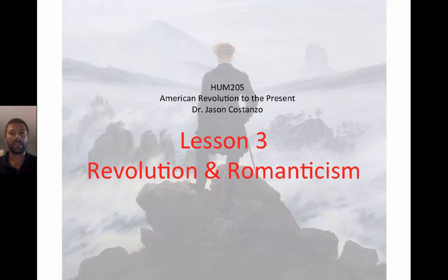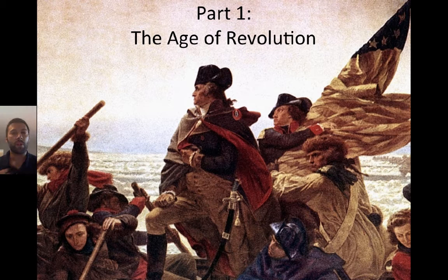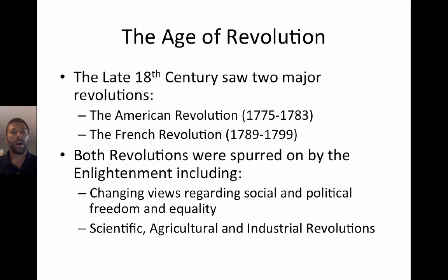We start with the first part: the Age of Revolution. Here you see a scene from the American Revolution — George Washington on the boat sailing. The Age of Revolution basically starts in the late 18th century, and we see two major revolutions at that time. One you should be very familiar with is the American Revolution, approximately 1775 or 1776 to 1783, and the second is the French Revolution from approximately 1789 to 1799.